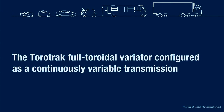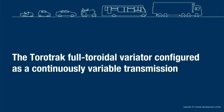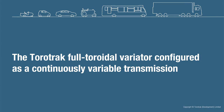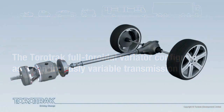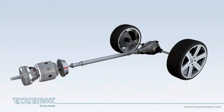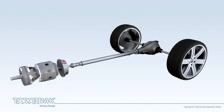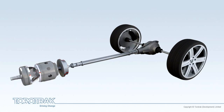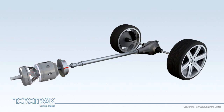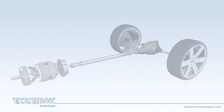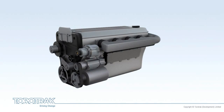The Torotrack full toroidal variator configured as a continuously variable transmission. The simplest application of Torotrack's variator technology is a continuously variable transmission or CVT. This animation shows the structure and function of such a CVT as applied in a rear-wheel drive vehicle. Looking from the front of the vehicle, the engine is directly coupled to, and drives, a full toroidal variator configured for CVT applications.